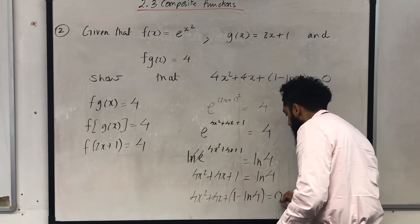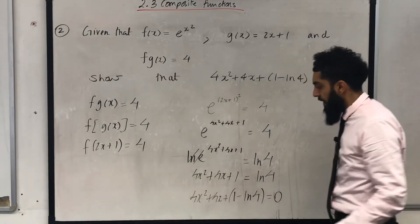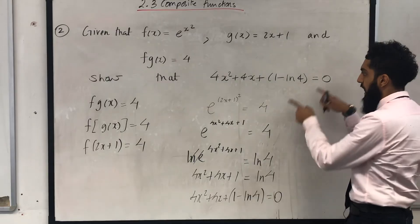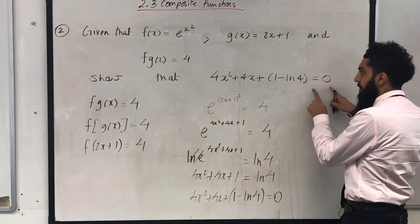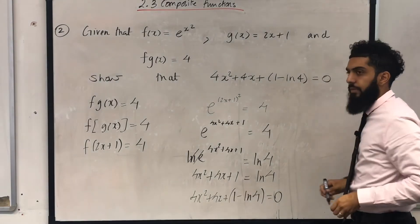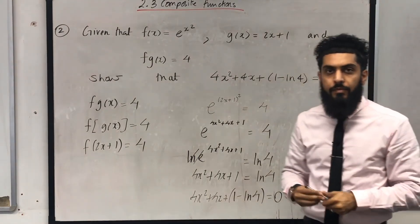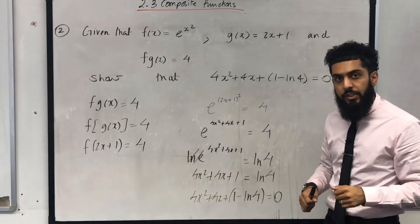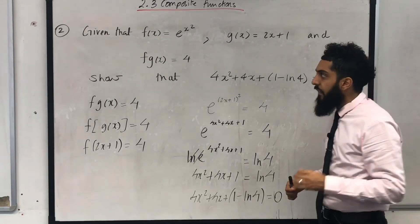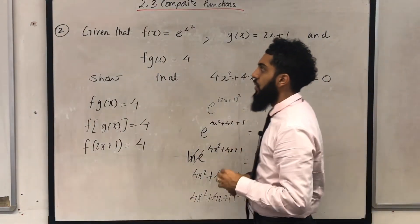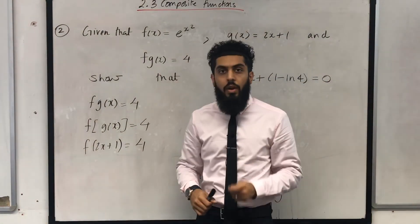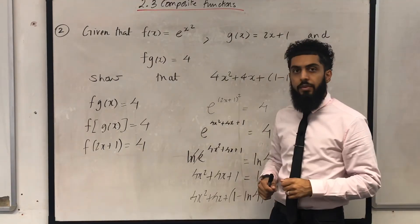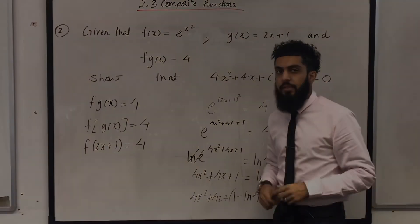So what I can do now is take the ln 4 to the other side. If I do that, I obtain 4x² + 4x + 1 − ln 4 = 0. And there you go — I have obtained the required equation. That there completes the question. If you found this video tutorial useful, please don't forget to subscribe and like the video.